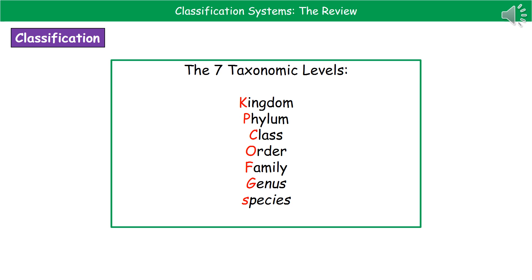When we're talking about classification, we have seven taxonomic levels, and they're shown there for you: kingdom, phylum, class, order, family, genus, species. It's a bit tricky to remember those terms, so it's always good to write your own little mnemonic — a little rhyme that's going to help you remember them using the first letter of each word.